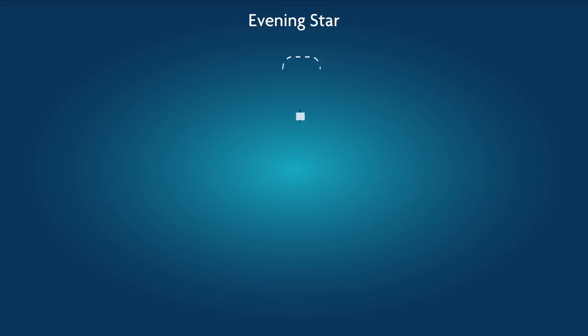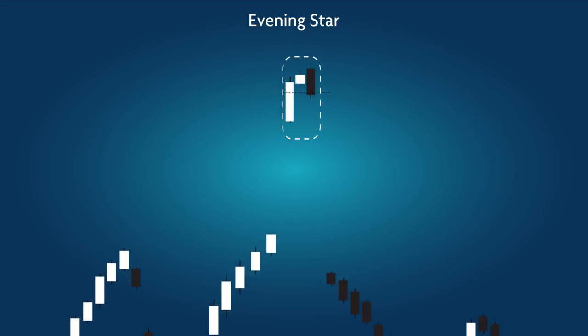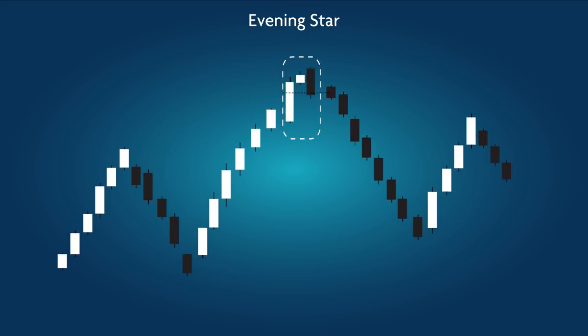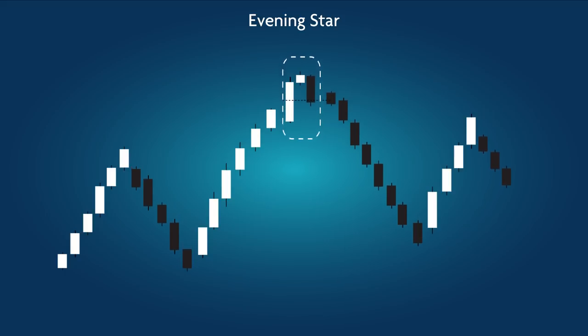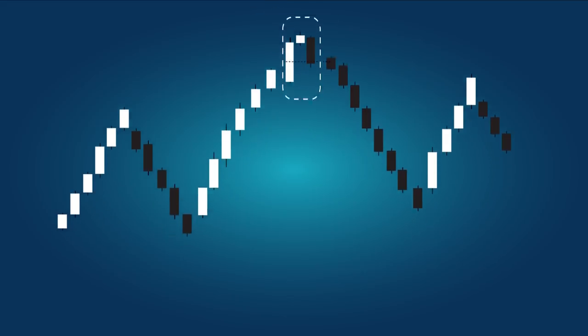Evening Star: a bearish pattern. At the trend's peak is a narrow-range candle indicating pattern reversal. The black candle following it falls at least halfway below the body of the clear candle that precedes the narrow-range candle.